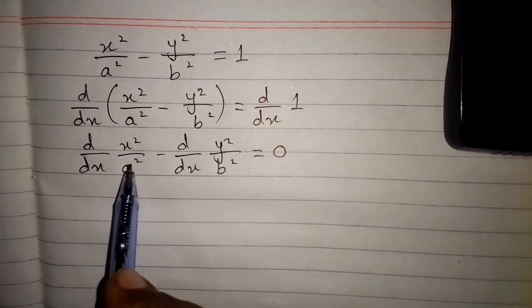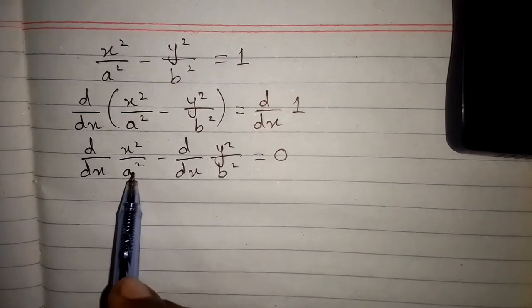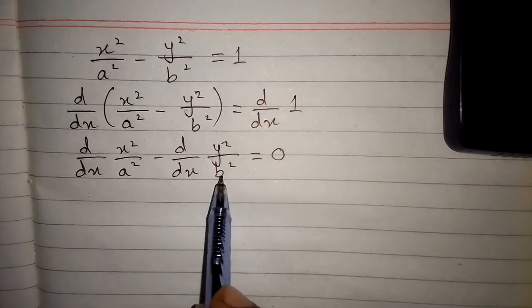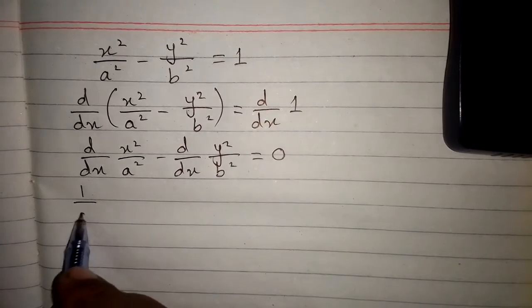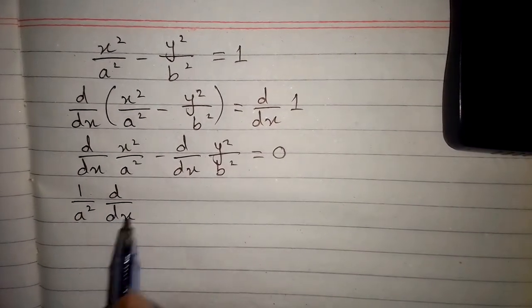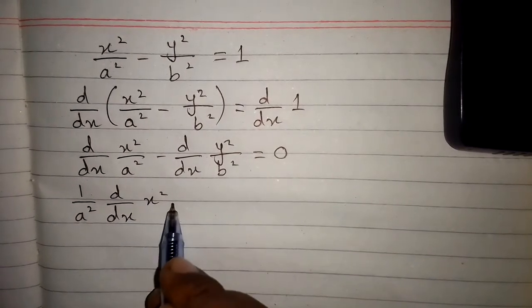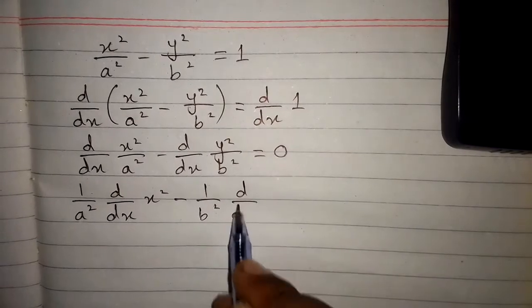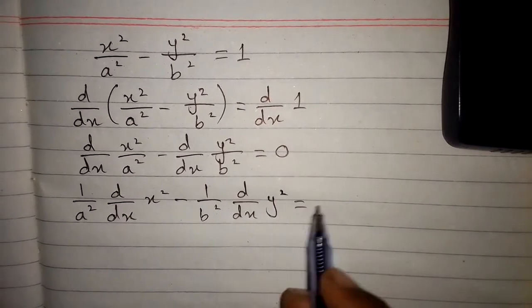Here we can see that the coefficient of x² is 1/a² and the coefficient of y² is 1/b². So we can write (1/a²)·d/dx of x² minus (1/b²)·d/dx of y² is equal to 0.